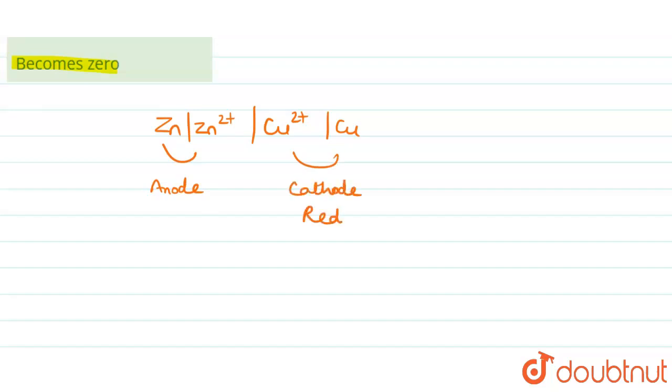So cathode reduction and over here anode oxidation takes place. So while writing the equation we write it as,